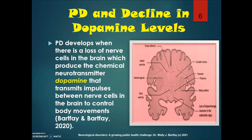Parkinson's disease and a decline in dopamine levels: Parkinson's disease develops when there is a loss of nerve cells in the brain which produce the chemical neurotransmitter dopamine, which transmits impulses between nerve cells in the brain to control body movements.